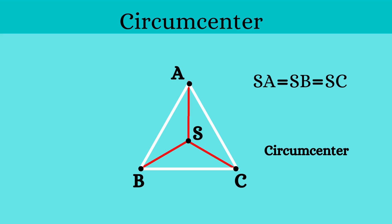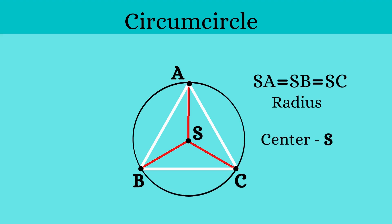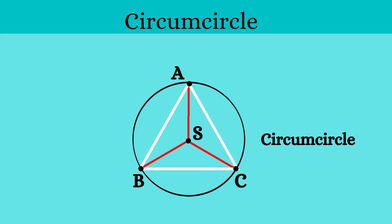Using any one of those equal lengths as the radius and S as the center, if we draw a circle, this circle will touch all three vertices A, B, and C. It is called the circumcircle of the triangle.